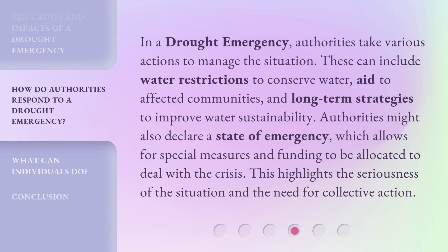In a drought emergency, authorities take various actions to manage the situation. These can include water restrictions to conserve water, aid to affected communities, and long-term strategies to improve water sustainability. Authorities might also declare a state of emergency, which allows for special measures and funding to be allocated to deal with the crisis. This highlights the seriousness of the situation and the need for collective action.